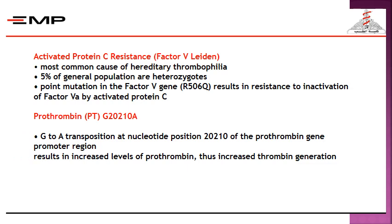Activated protein C resistance, or factor V Leiden, is the most common cause of hereditary thrombophilia. About 5% of the general population are heterozygous for this factor. A point mutation in the factor V gene results in resistance to inactivation of active factor Va by activated protein C, which leads to thrombosis.